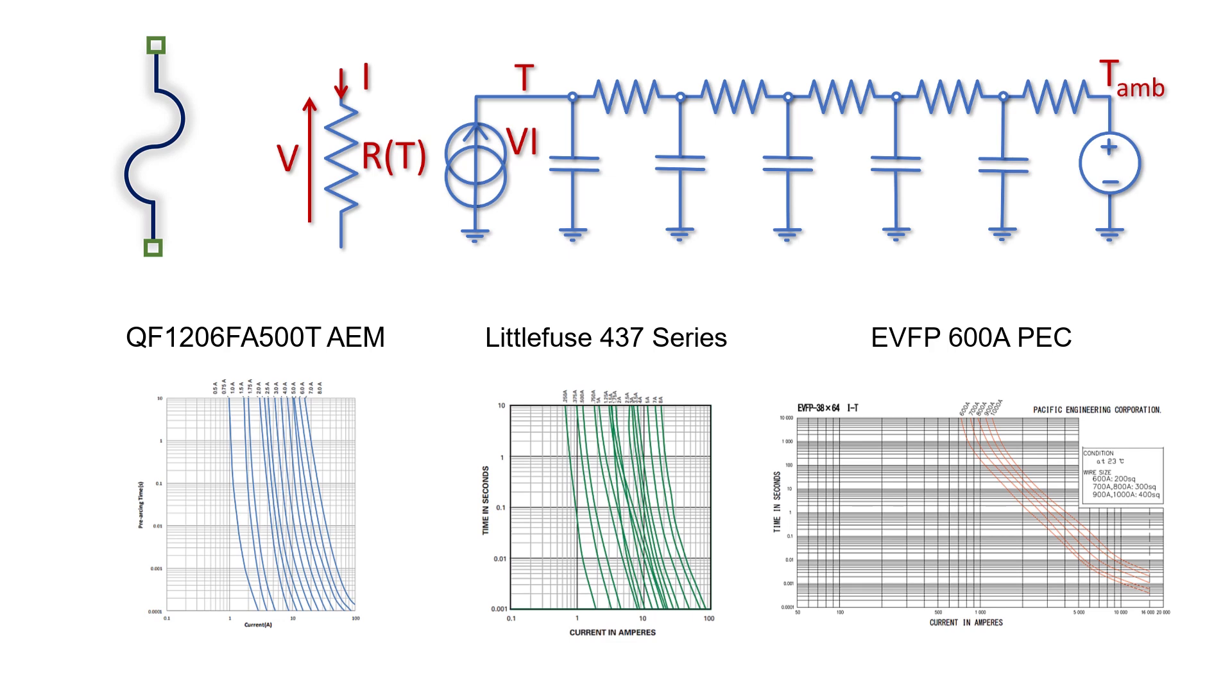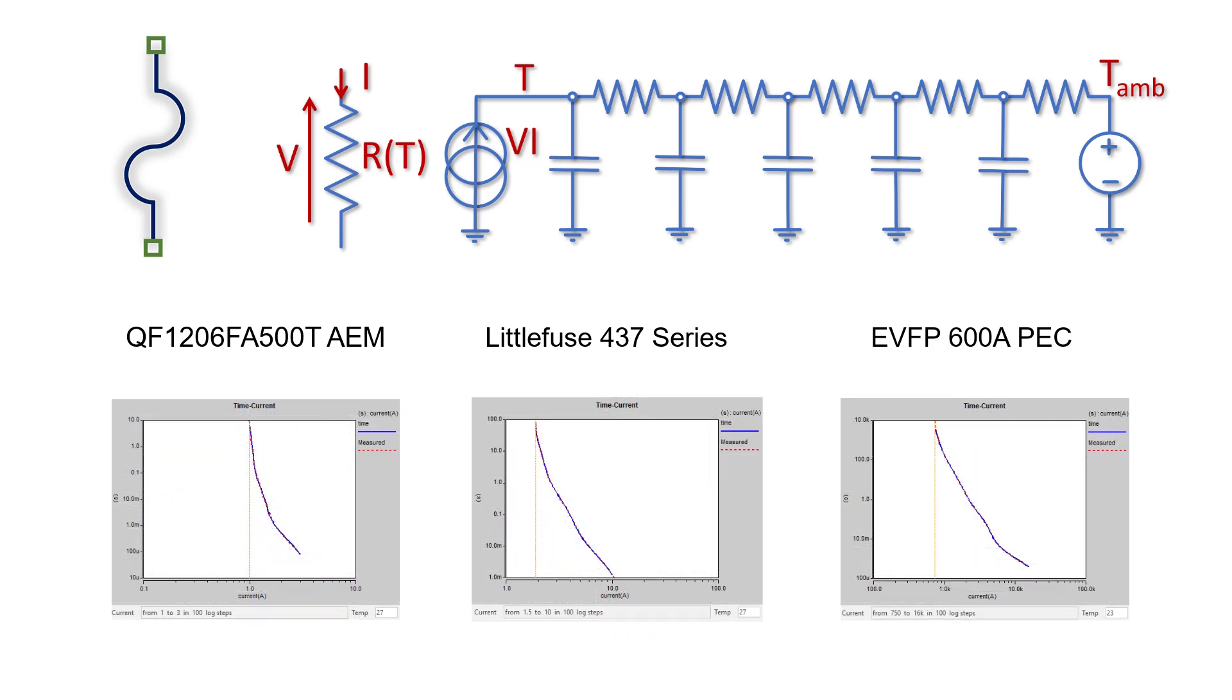To accurately fit such curve over decades of blow time scale, the Sabre RD fuse model includes five thermal RC cells fed heat by a temperature dependent resistor.